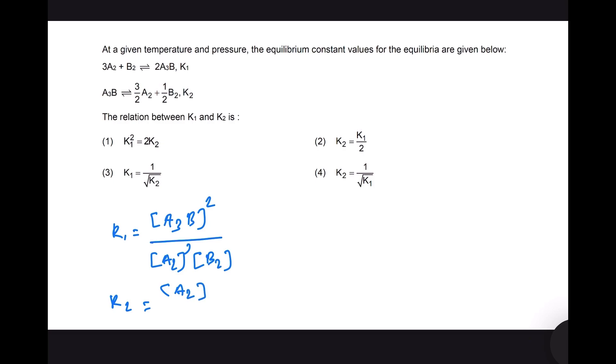And then k2 will be concentration of a2 to the power 3/2 times concentration of b2 to the power 1/2 divided by concentration of a3b.